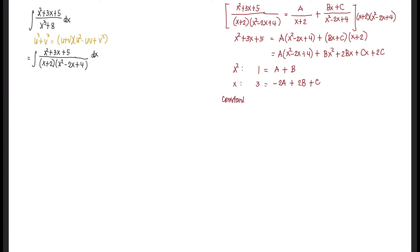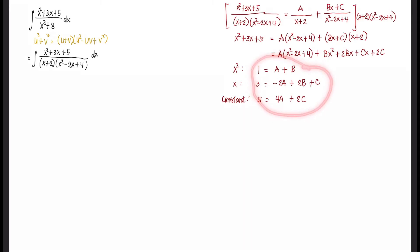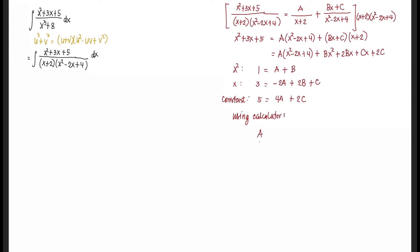For the constant term: on the left we have 5, and on the right we have 4A plus 2C. So we have three equations and three unknowns — a system of linear equations. Using a calculator, it gives us the values directly: A equals one-fourth, B equals three-fourths, and C equals 2. After getting these values, we now substitute.